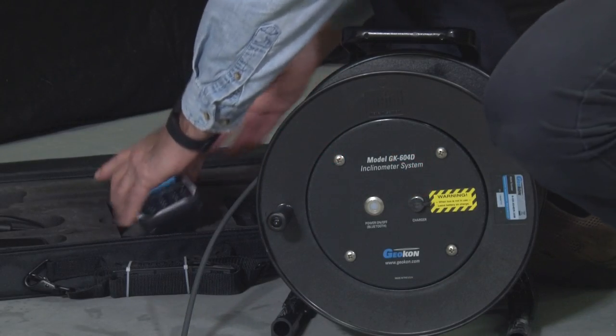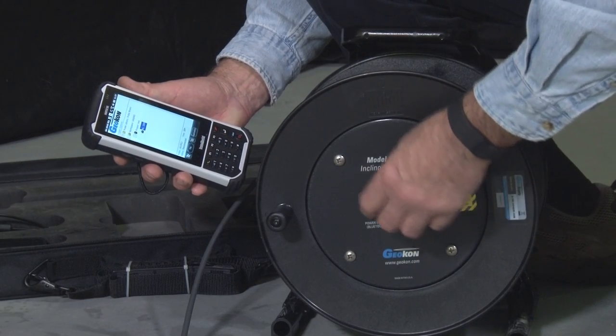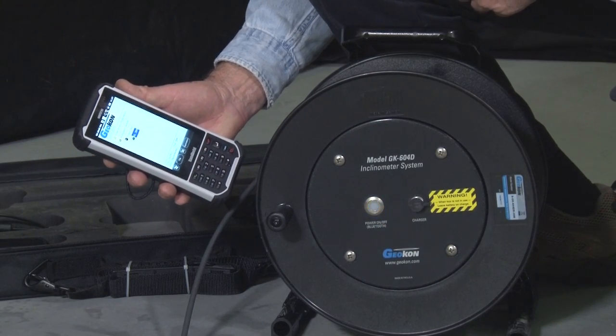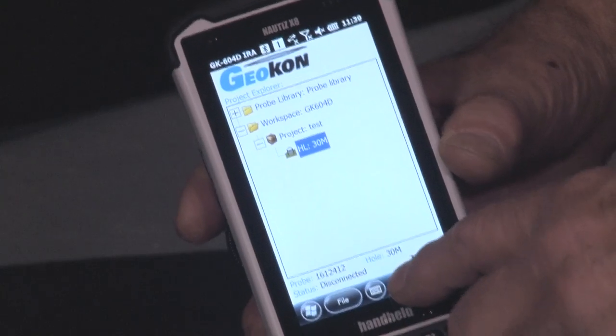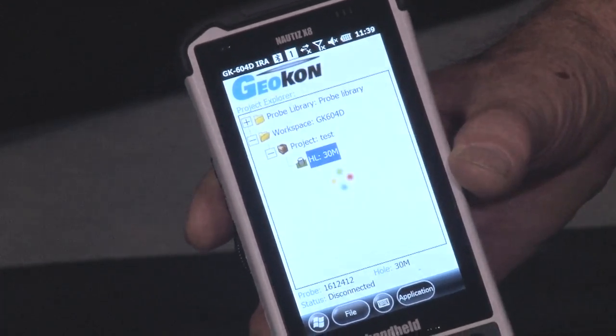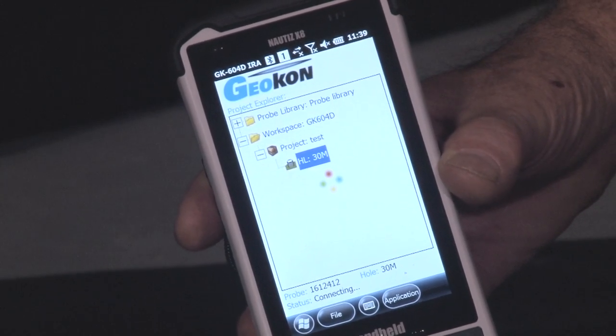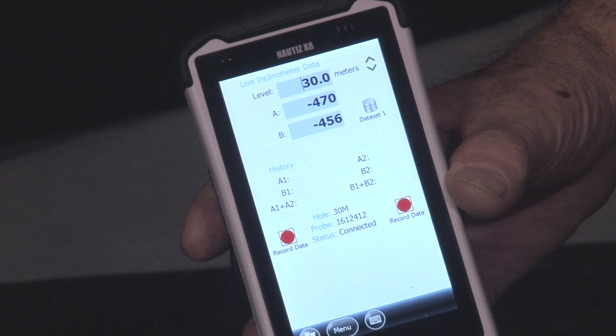With the handheld PC powered up, press the Bluetooth Connect button on the reel to establish wireless communication. The blue light will flash. On the field PC, press Application, then Live Readings from the pop-up menu. The field PC will indicate when connection is made.